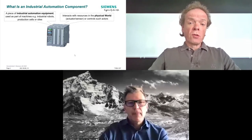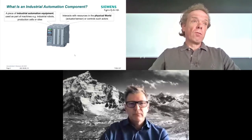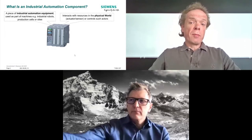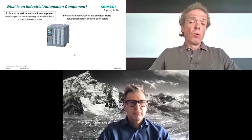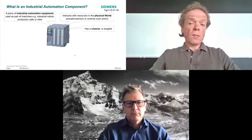It has some properties. First, there are components called actuators and sensors, which actually interact with the physical world — that is one class of industrial automation component. And there are other classes of components which control such actuators and sensors. So these are the most important classes of components.